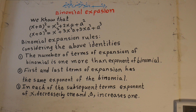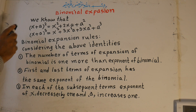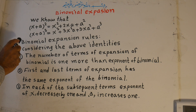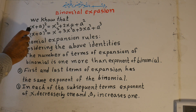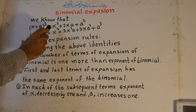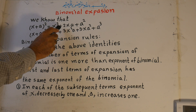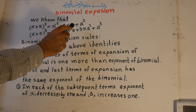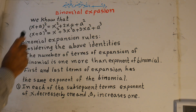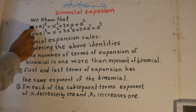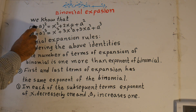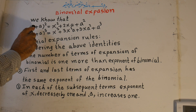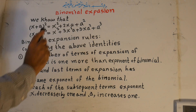Welcome to mathematics class. The topic of the lesson is binomial expansion. We know from the identity or multiplication formula that x plus a to the power of 2 is equal to x to the power of 2 plus 2xa plus a to the power of 2. This means that if we multiply x plus a by x plus a, the product is this one.